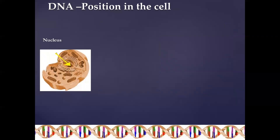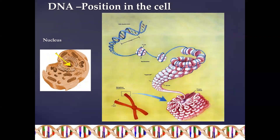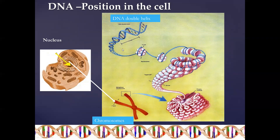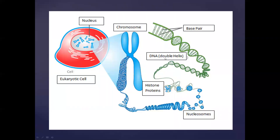Within the nucleus we have chromatin. In certain stages of cell division we get the formation of chromosomes. These chromosomes are made up of chromatin that is tightly coiled and twisted together. This chromatin is made up of proteins with DNA wrapped around it. So the DNA is wrapped around proteins, which are further coiled and condensed into a structure known as chromosomes, found within the nucleus of our cells.